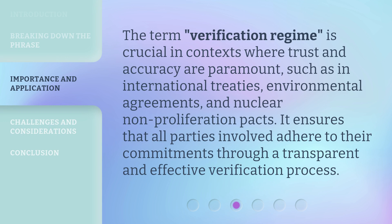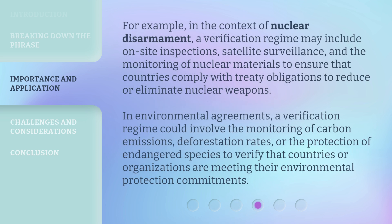The term verification regime is crucial in contexts where trust and accuracy are paramount, such as in international treaties, environmental agreements, and nuclear non-proliferation pacts. It ensures that all parties involved adhere to their commitments through a transparent and effective verification process. For example, in the context of nuclear disarmament, a verification regime may include on-site inspections, satellite surveillance, and the monitoring of nuclear materials to ensure that countries comply with treaty obligations to reduce or eliminate nuclear weapons.